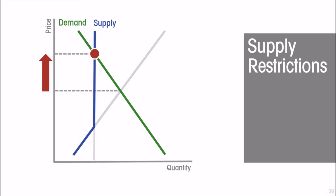A quantitative restriction divides the market into the suppliers who are able to get the authority or the permission — who get to remain in the market and supply the quantity allowed — and those that are kicked out of the market. Some are better off, some are worse off.